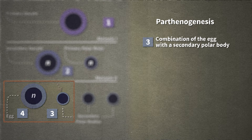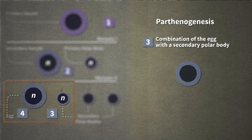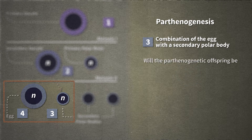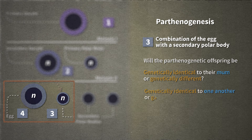Imagine that the egg and the polar body produced at the end of meiosis II fused to yield a diploid cell, and that this new cell develops into an offspring by parthenogenesis. Will the parthenogenetic offspring be genetically identical to their mom, or genetically different? Will the offspring be genetically identical to one another, or genetically different? Will the offspring be male or female?